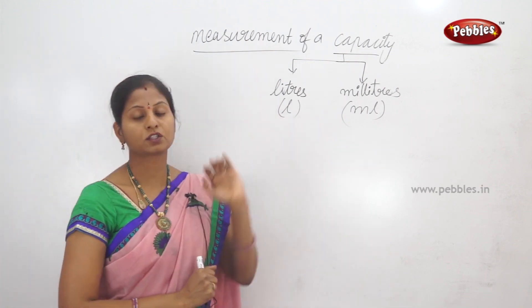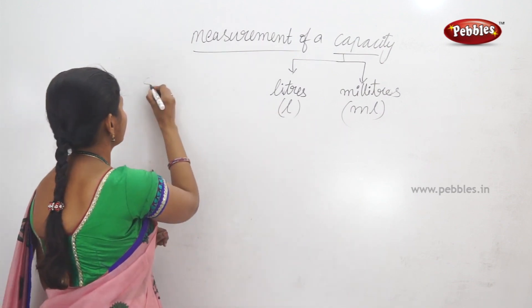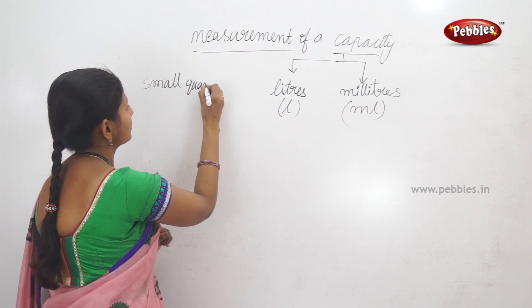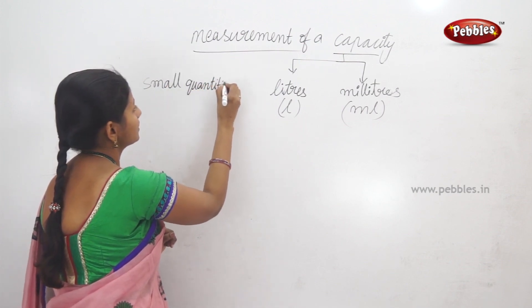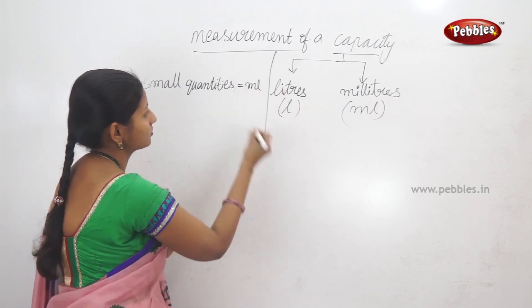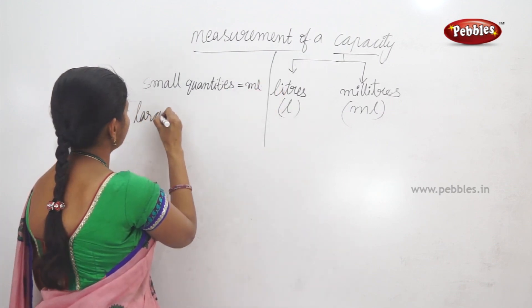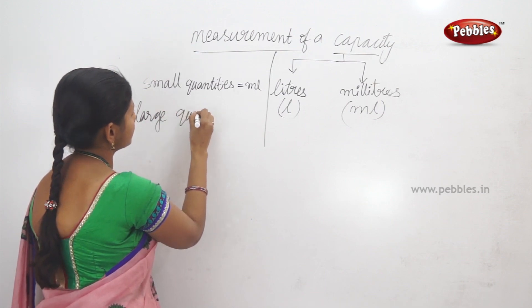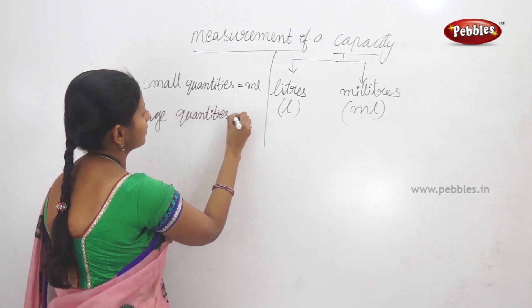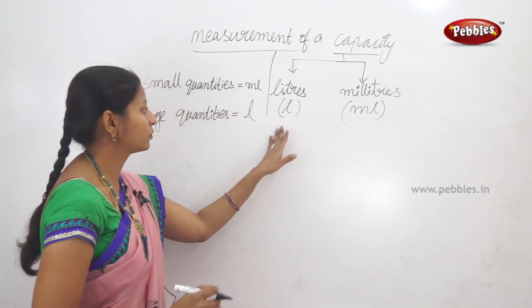The high quantity is a little more than that. So small quantity has to be milliliters, and large quantity has to be liters. So liters and milliliters.